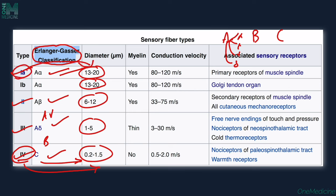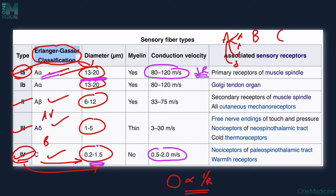The cross-sectional area is inversely proportional to resistance, so a larger diameter nerve means a faster conduction velocity. C fibers have conduction velocities of 0.5 to 2 meters per second, whereas A-alpha fibers, the largest, have 80 to 120 meters per second.